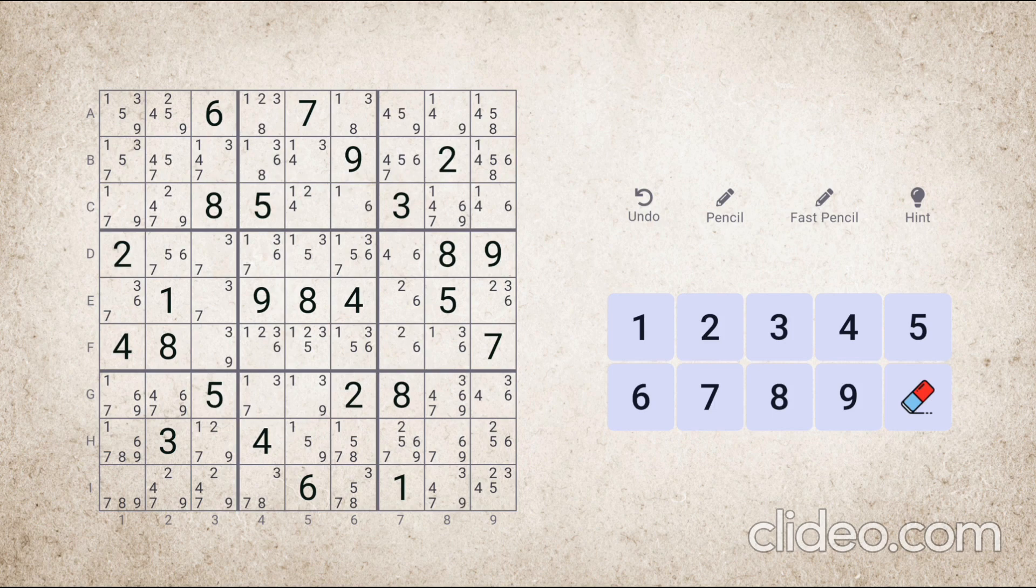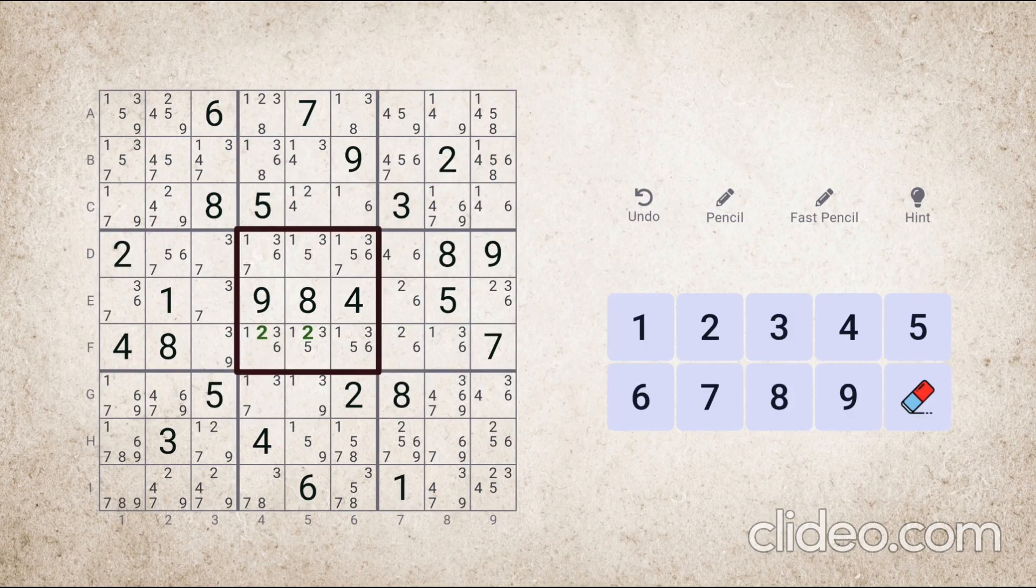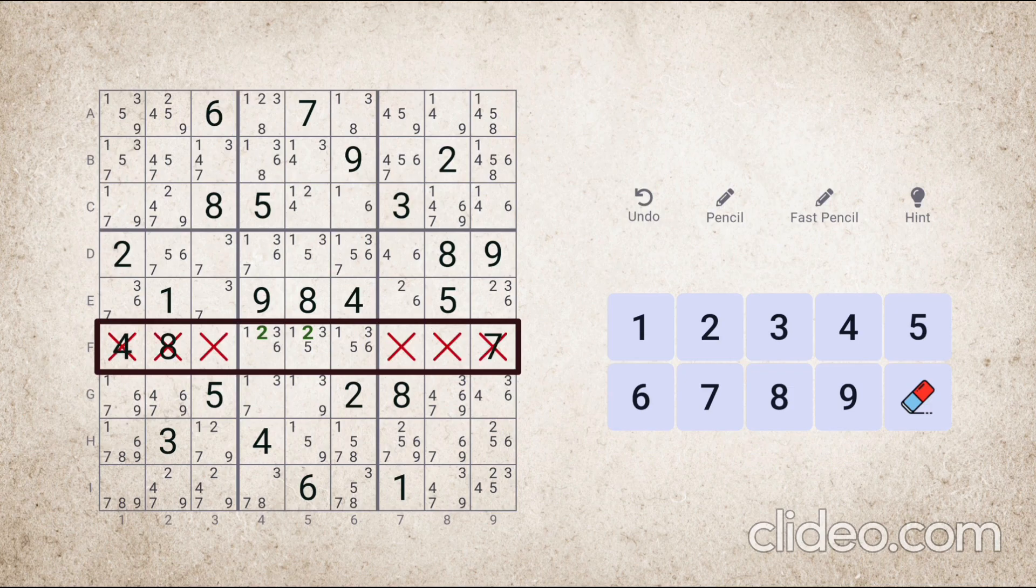Let's understand it better with an example. For example, look at the number two in this block. All the cells where number two can go are part of row F as well. And just like we have seen in the definition, if this is the case, then number two cannot be placed in all of these cells in this row.